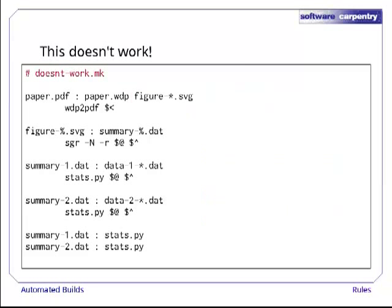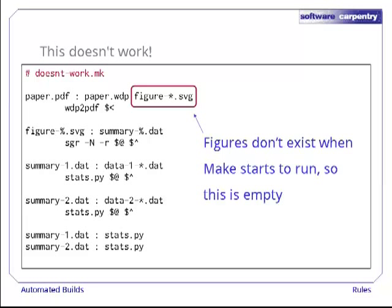It's tempting to go one step further and make paper.pdf depend on figure*.svg, but this doesn't work. The reason is that the figure files may not exist when MAKE starts to run. After all, MAKE creates them. In that case, figure*.svg will expand to nothing, so MAKE would mistakenly believe that paper.pdf depended only on paper.wdp.